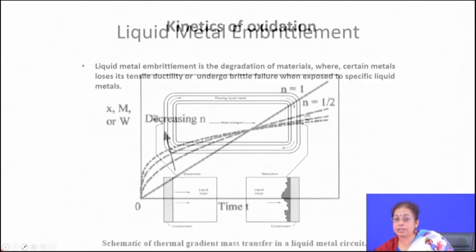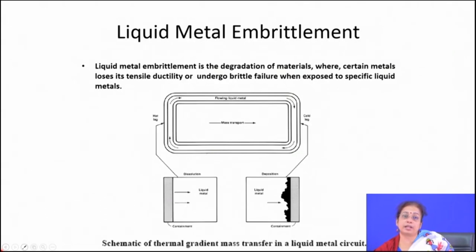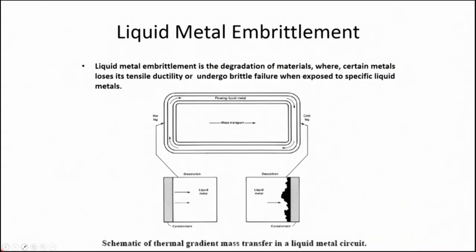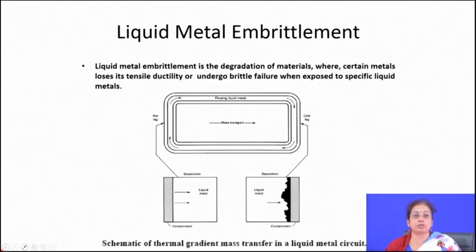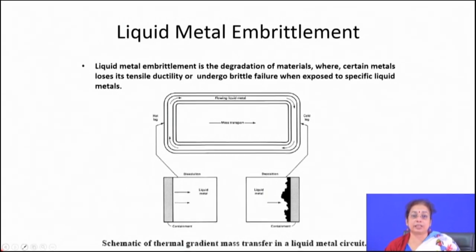The next type of corrosion is liquid metal corrosion, also called dissolution or embrittlement. When a solid metal is in contact with a liquid metal, it gets brittle — this is degradation where certain metals lose their tensile ductility or undergo fracture when exposed to a specific liquid metal. This phenomenon is called liquid metal embrittlement.